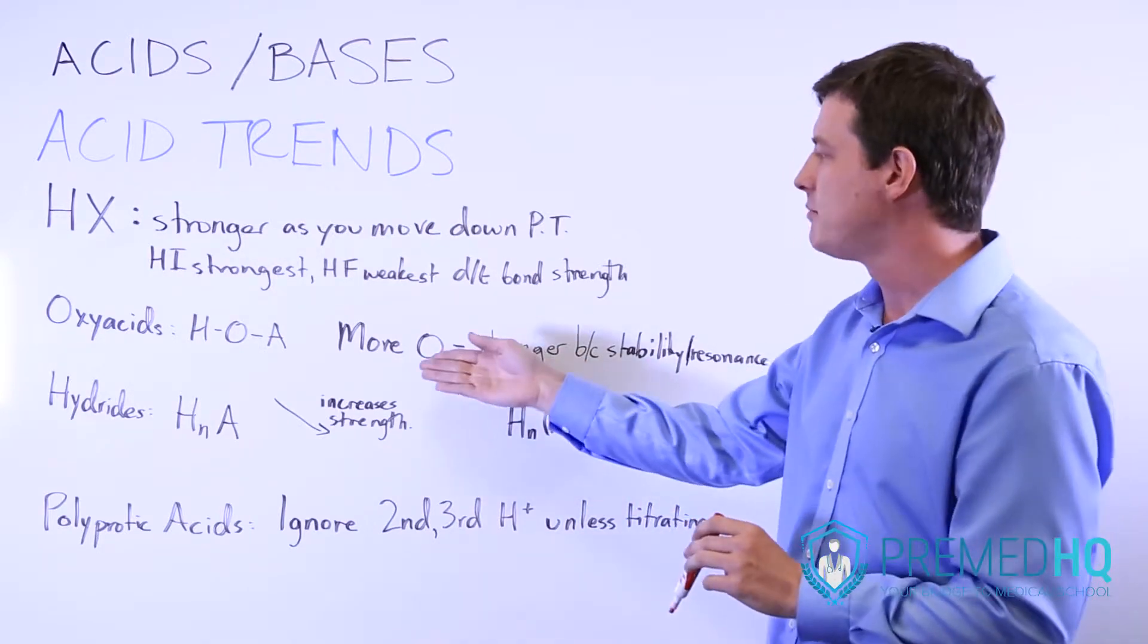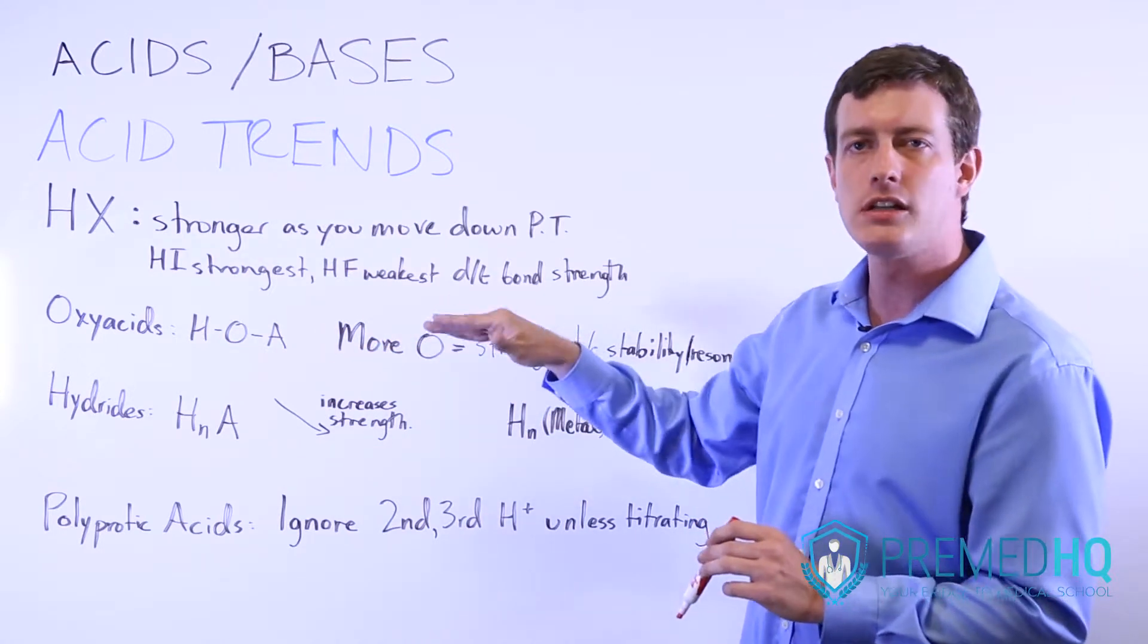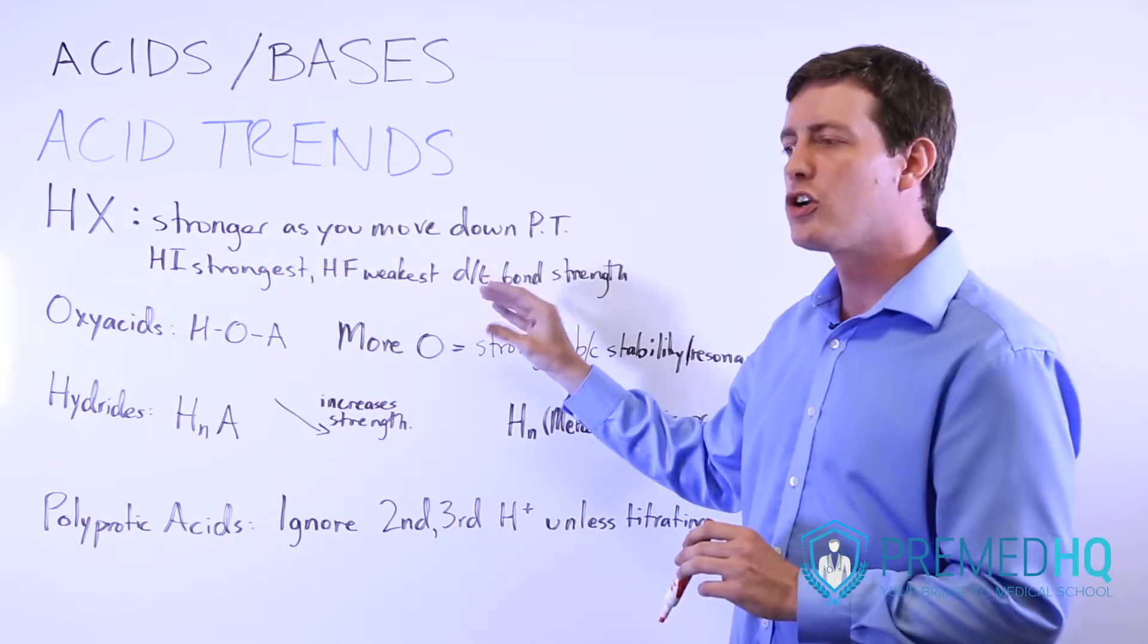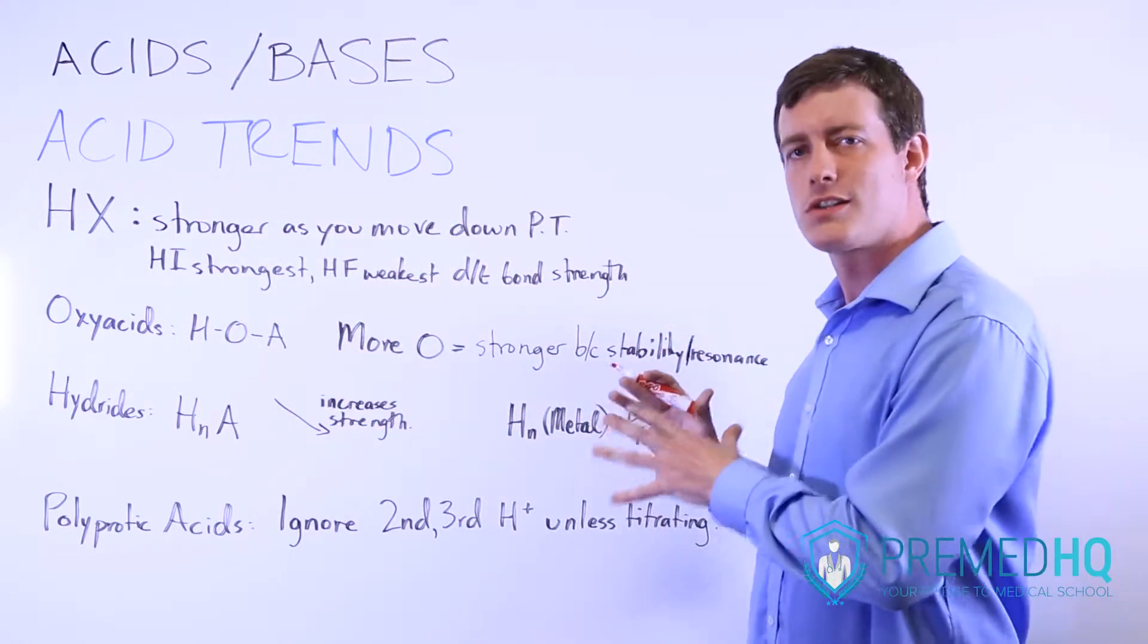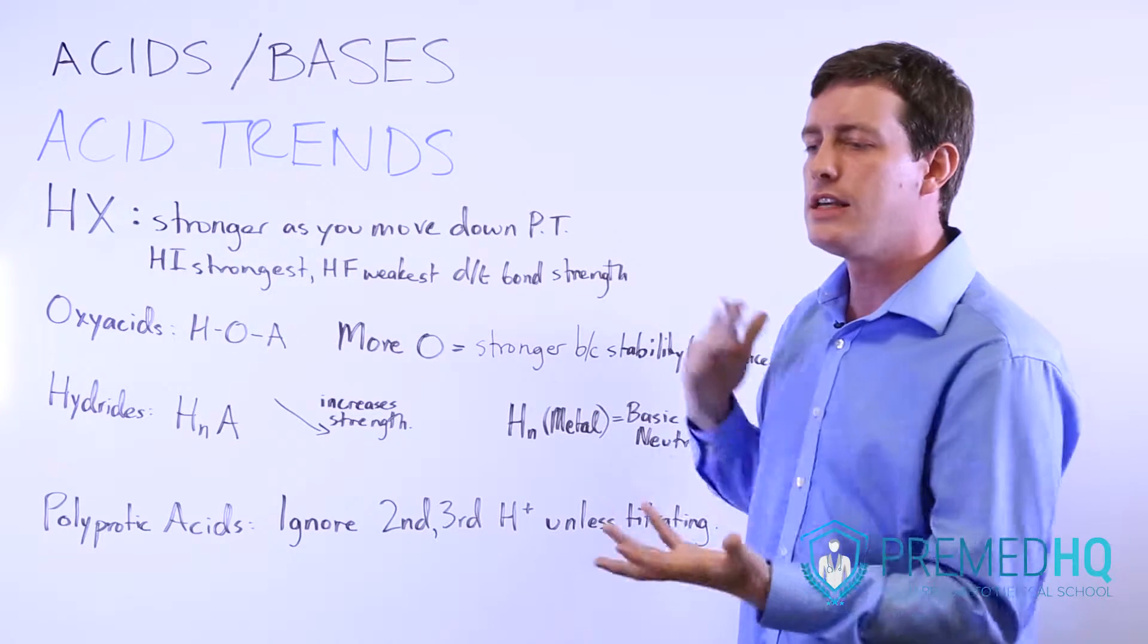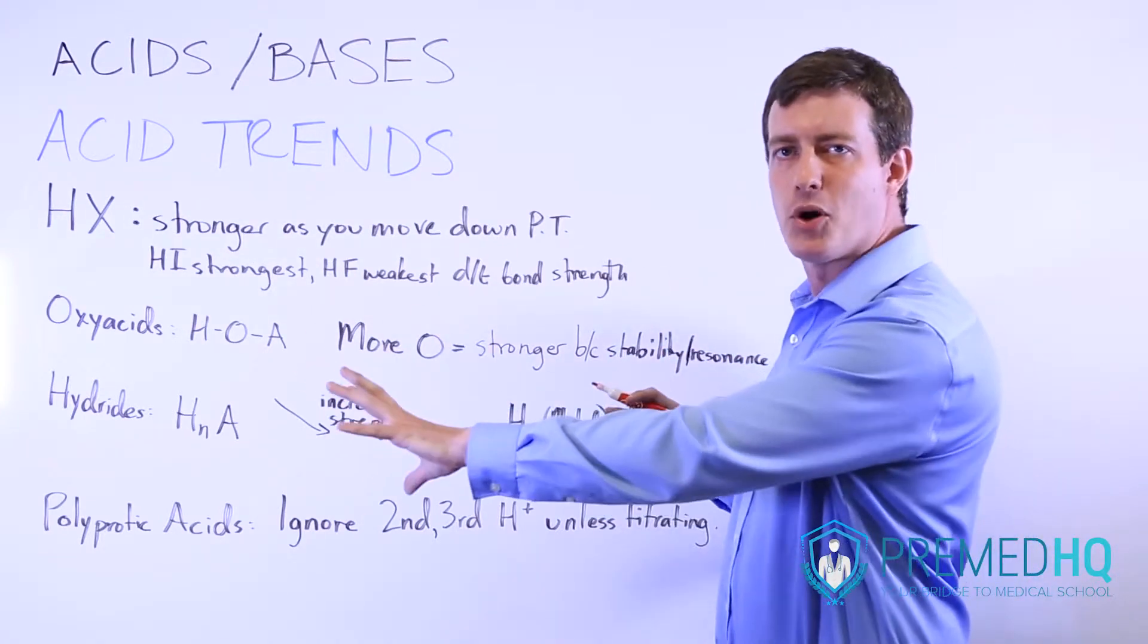And so you see this, for example, with chloric, perchloric, and hydrochloric acid. HClO3 is stronger than HClO2. And it's because the more oxygens that are there, the easier it is for it to handle those electrons when it gives up that proton.